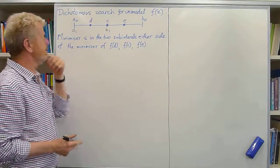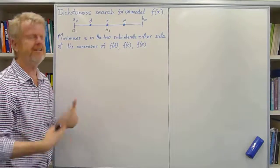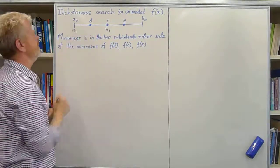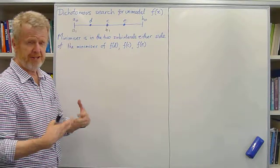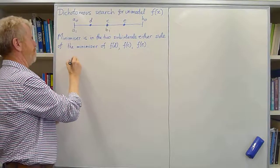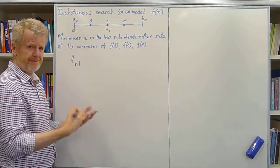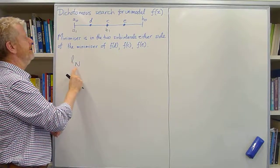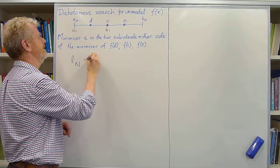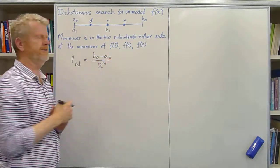Okay, now what we're interested in is how does this length of the interval decrease as we do more and more iterations? And the answer that you can see from here is that each iteration, the interval under consideration halves. So after n iterations, the length of the nth interval that we know the minimizer is in is the initial length, b0 minus a0, halved n times.